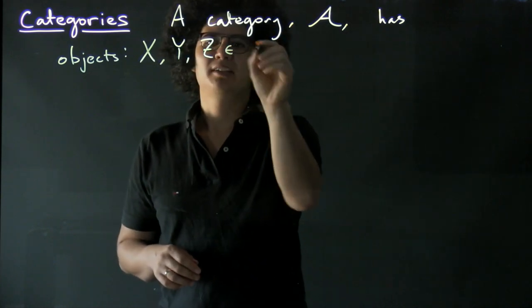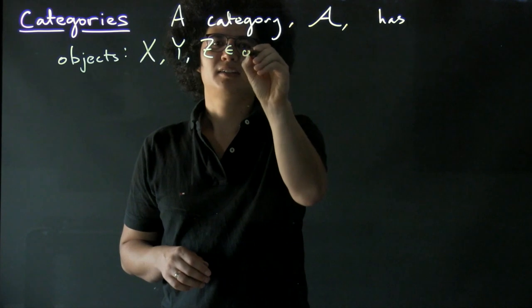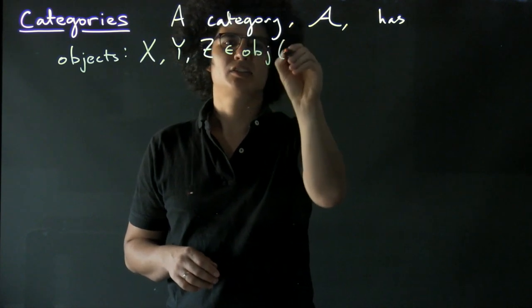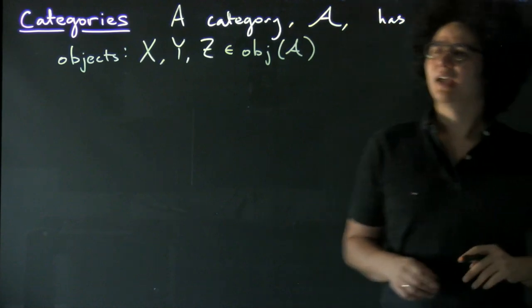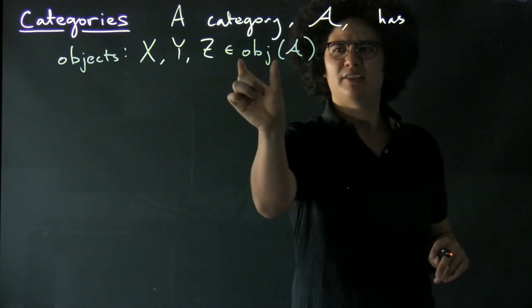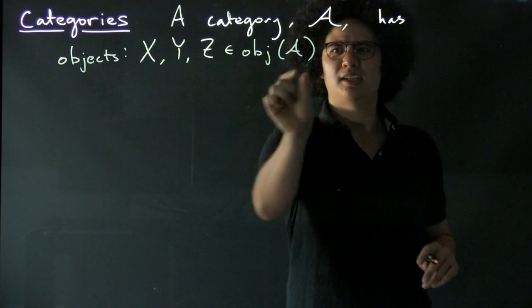And people will often write, let's say, these are contained in the collection of objects of our category A, and they might even leave out this and just write that they're contained in A.